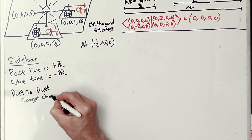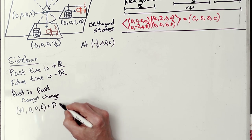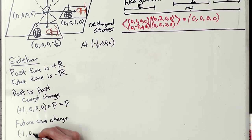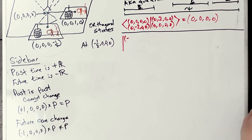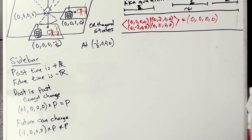Because the past cannot change, you multiply one times anything and you end up with the same thing, but the future can change. Alright, so what do we do here?